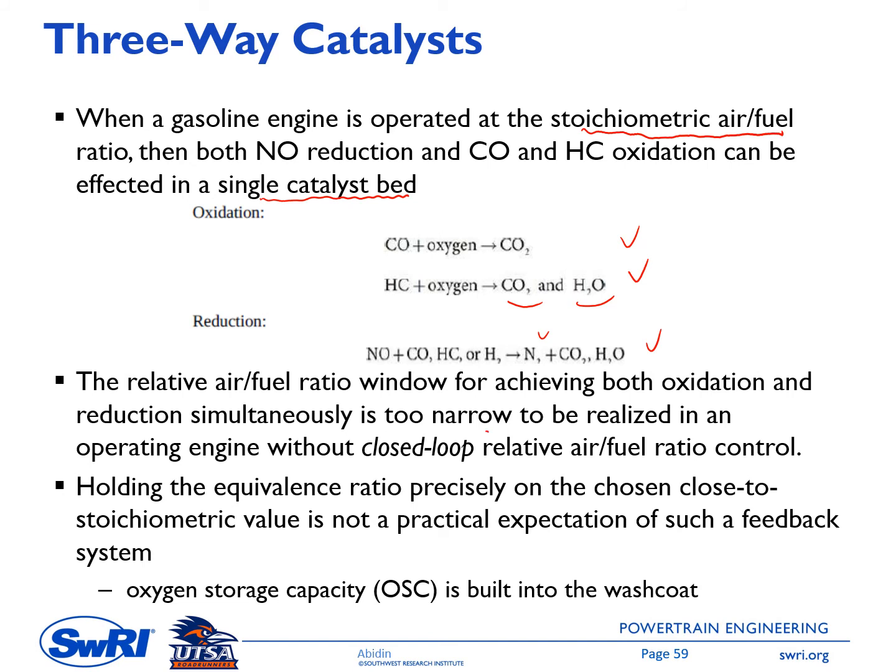In this case, we need a closed-loop operating condition in the engine that controls the amount of air and fuel to maintain a near-stoichiometric operating condition. Holding the equivalence ratio precisely at a value close to stoichiometric is not a practical expectation of such a feedback system. So sometimes we have oxygen storage capacity (OSC) in the wash coat to compensate in case the engine operates a bit away from the stoichiometric operating condition.